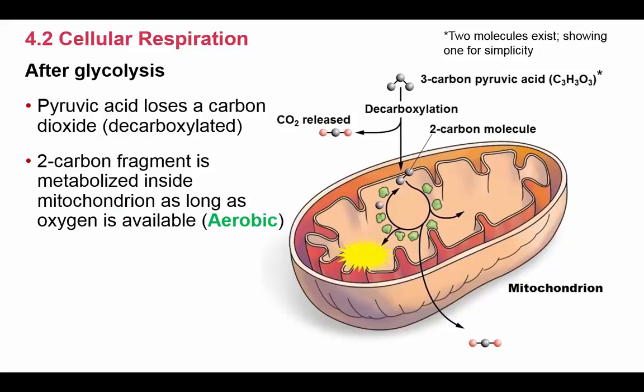After glycolysis, pyruvic acid undergoes decarboxylation — it loses a carbon dioxide molecule. Pyruvic acid was a three-carbon molecule, so removing one carbon turns it into a two-carbon fragment. These two-carbon fragments then move into the mitochondria where the rest of cellular respiration can occur.